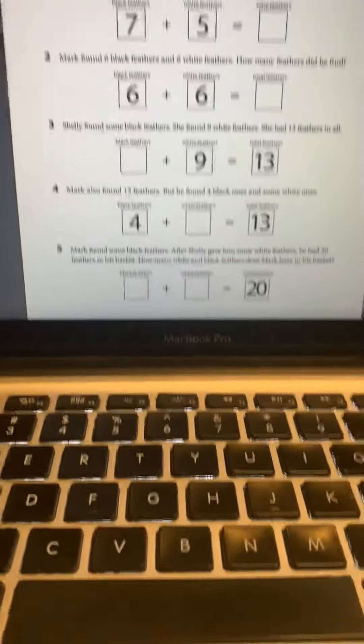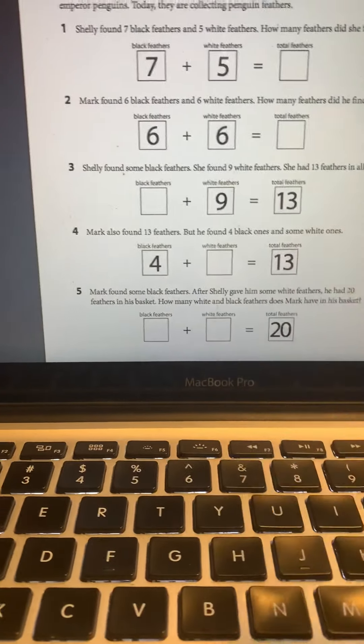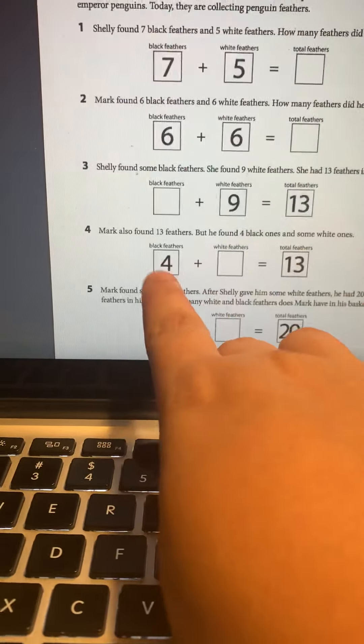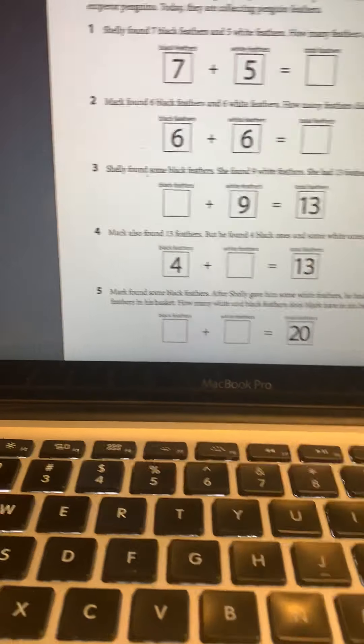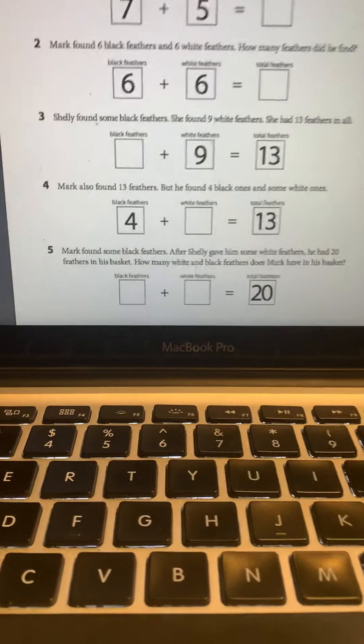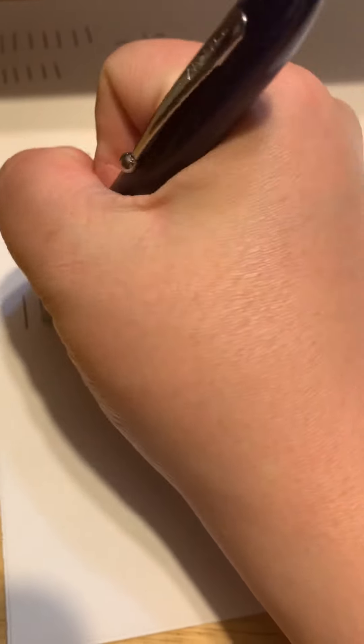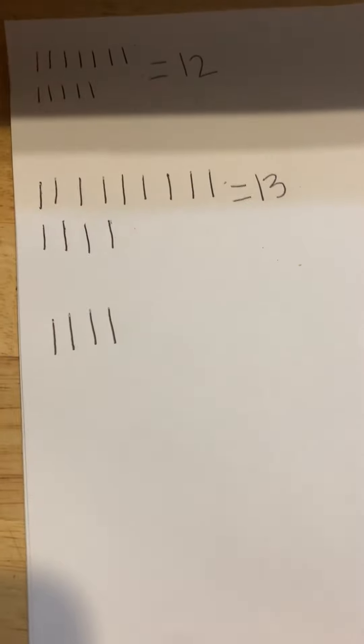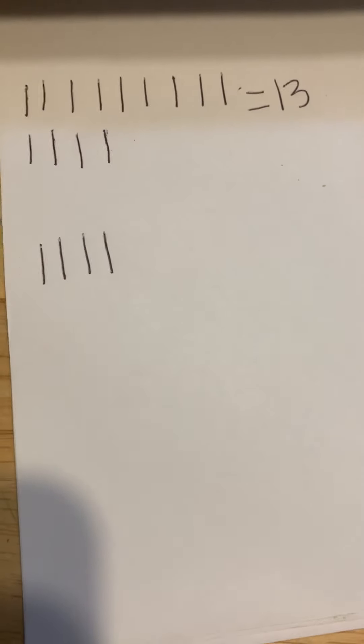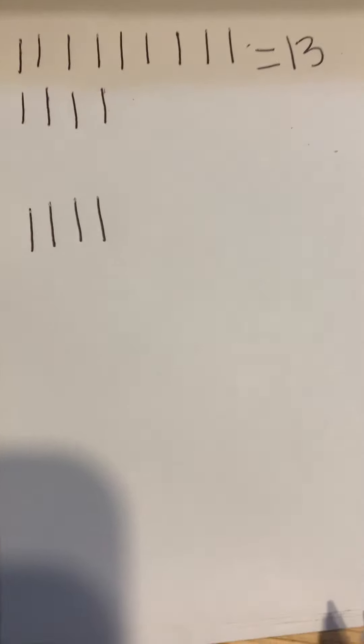Number four, I'm going to kind of let you do this one a little bit on your own. So we've got the number four and we've got the number 13. We got to figure out what number plus four equals 13. So I'm going to go back to my page and I'm going to put four more tally marks. Now you're going to count on and see how many more tally marks you need to add to get to 13 as your total number. I'm going to give you a second to do that.